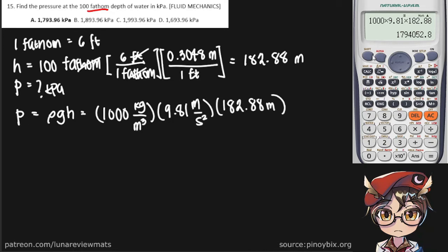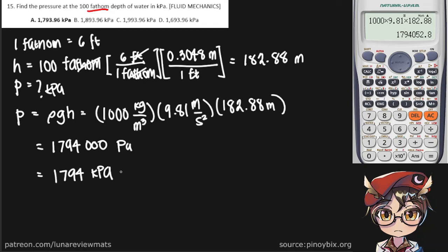Plugging that into our calculator, we arrive at one million seven hundred and ninety-four thousand pascals. Now just convert that into kilopascals, and we should arrive at our final answer — Letter A.